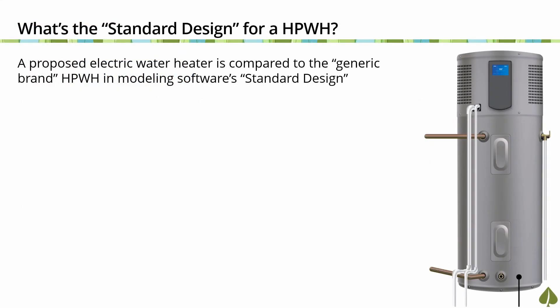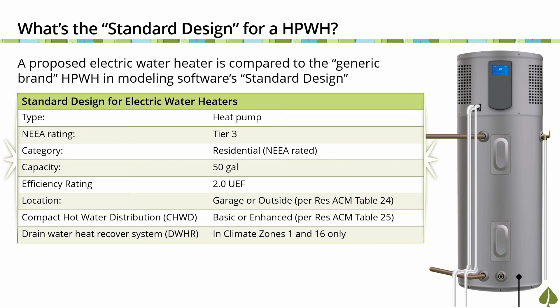When modeling low-rise residential buildings for compliance with the 2019 Energy Code, the standard design for domestic hot water, or DHW, serving individual dwellings is based on the prescriptive requirement found in Section 150.1 C8 and the proposed water heater type being either gas or electric. When the proposed design specifies an electric water heater, the compliance software sets the standard design to a generic brand heat pump water heater with a NEA Tier 3 rating, a capacity of 50 gallons, and a UEF rating of 2.0. The prescriptive requirement also includes a compact hot water distribution, or CHWD, system using either the basic credit or enhanced credit depending on the climate zone.